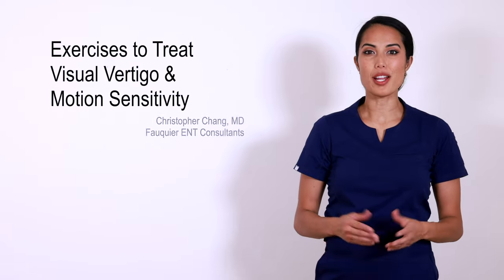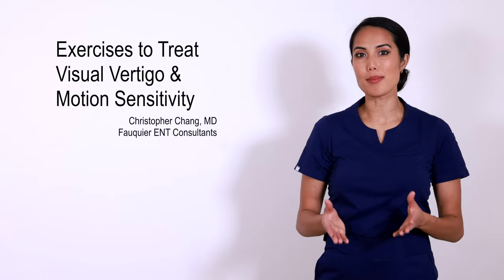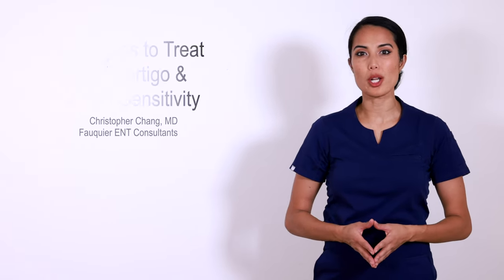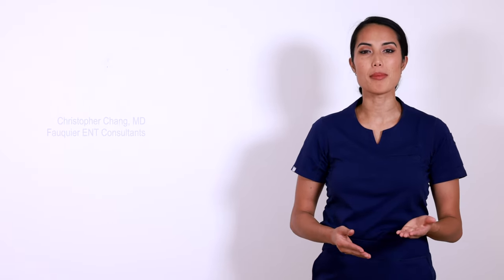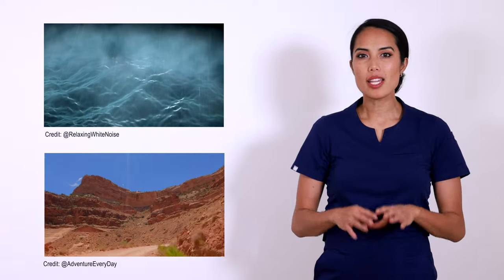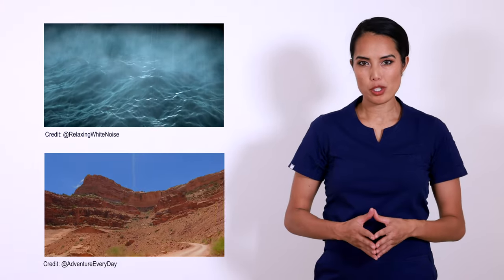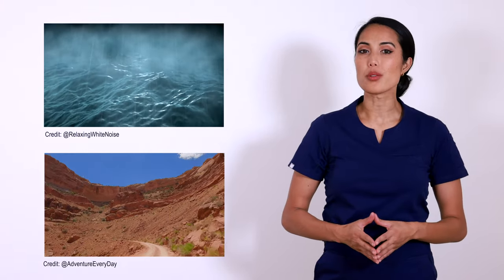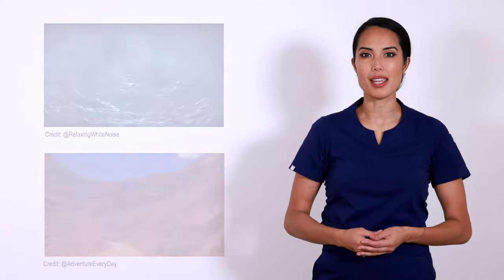Visual vertigo is a generic term to describe dizziness triggered by visual stimuli of some kind. This can also be a contributing factor to those who suffer from motion sensitivity. The dizziness brought on by such visual stimuli can be described as spinning, brain fog, rocking, floating, heaviness, etc.